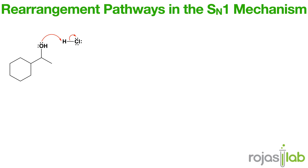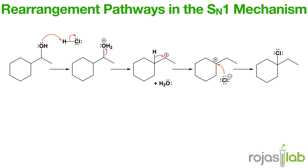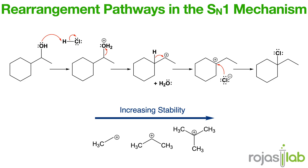Next, let's talk about SN1 mechanisms that have carbocation rearrangement. First, the leaving group departs, resulting in carbocation formation. From here, a hydride or alkyl shift produces a more stable carbocation. Finally, the nucleophile attacks the rearranged carbocation. Key points are that rearrangements explain unexpected product positions, and they only occur if the new carbocation is more stable — for example, tertiary carbocations are more stable than secondary carbocations.